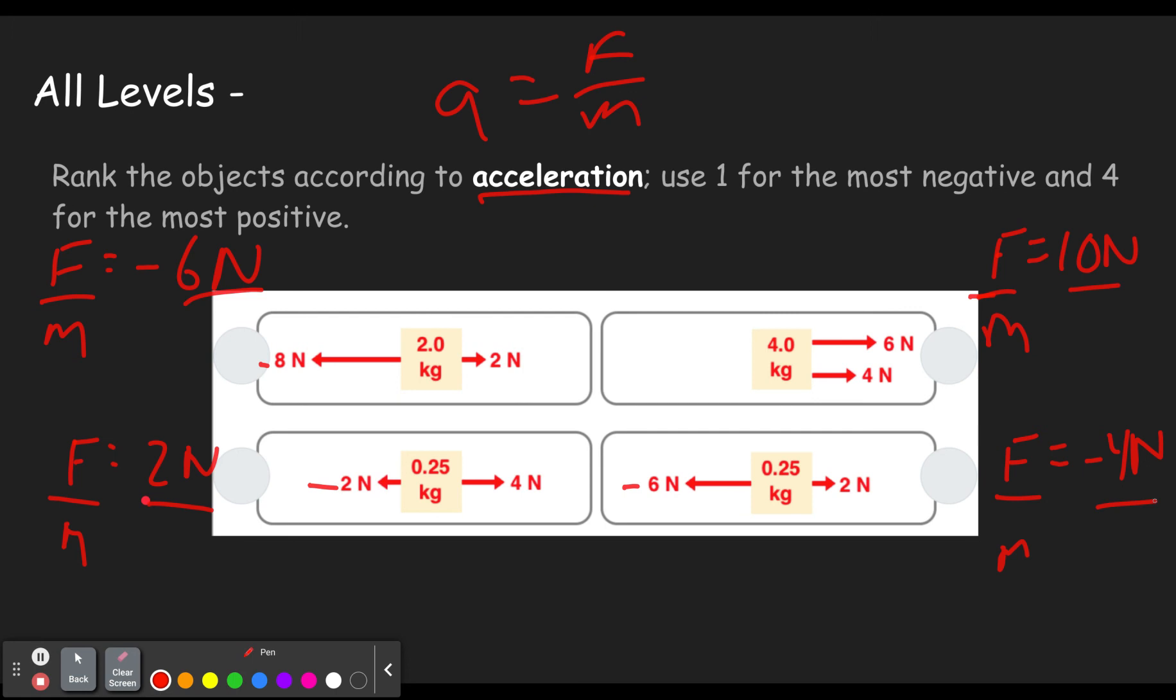Okay. So we got to put the mass underneath each of these. And remember, mass is measured in kilograms. So here we have two kilograms. So the acceleration for this one is three meters per second squared. Here we have 0.25 kilograms. Two divided by 0.25 gives you eight meters per second squared.